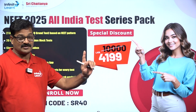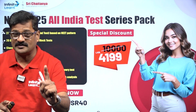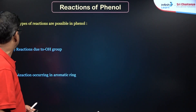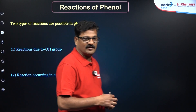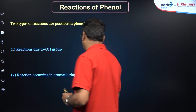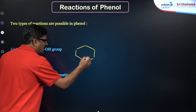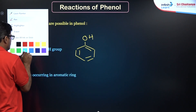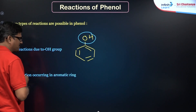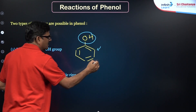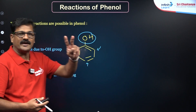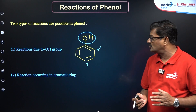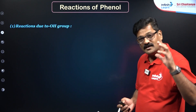Let us start the reactions of phenol in one shot. You are going to get one question from the phenol chapter in the upcoming NEET examination. The phenol has a structure with an OH group on a benzene ring. There are two kinds of reactions possible: reactions of the OH group, and electrophilic aromatic substitution reactions.